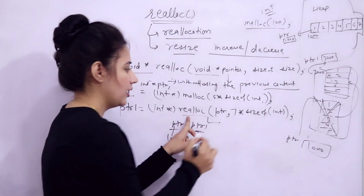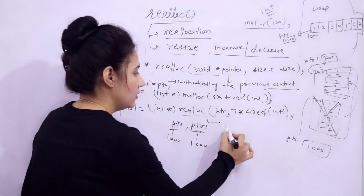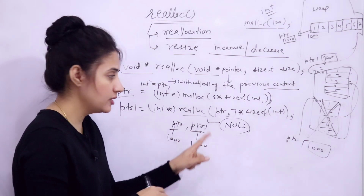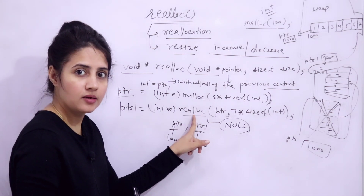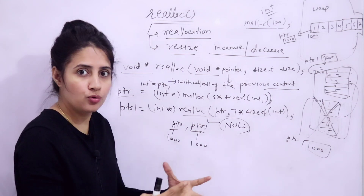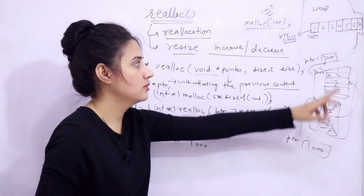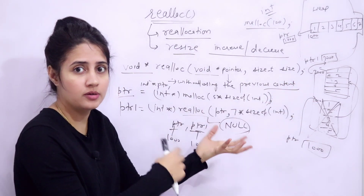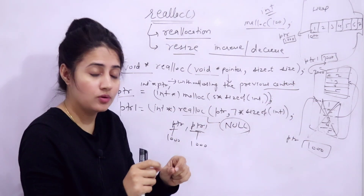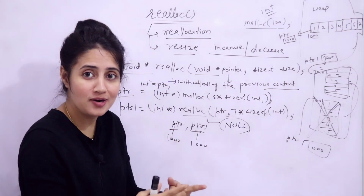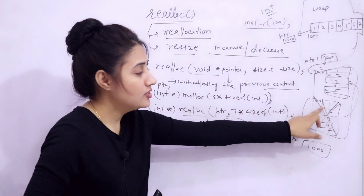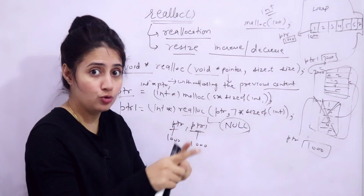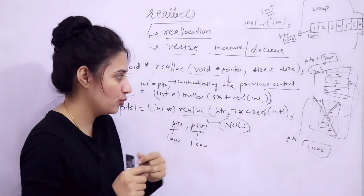If realloc is not able to reallocate memory successfully, it will return null — same as malloc and calloc which also return null on failure. On success it returns the pointer. We cannot be sure whether it will expand the same block or allocate a new one — it depends on the situation — but we can be sure that your original data will be safe.